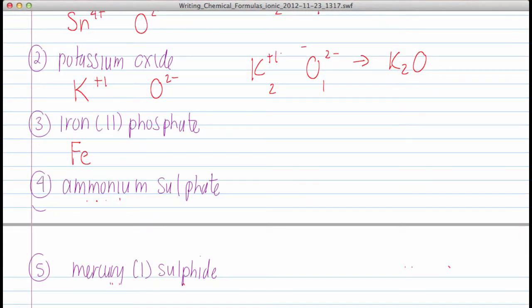Next example is iron 3, so iron 3 plus. Phosphate is P O 4 3 minus. So Fe 3 plus, P O 4 3 minus and criss-cross. We would just have Fe P O 4.